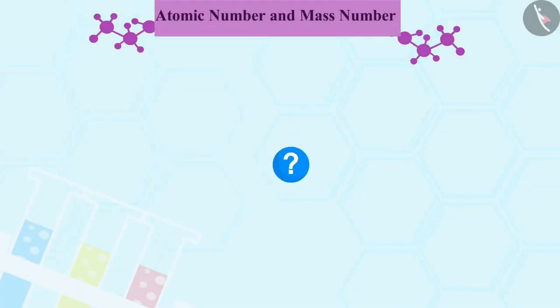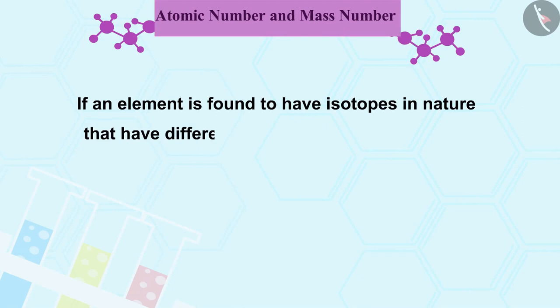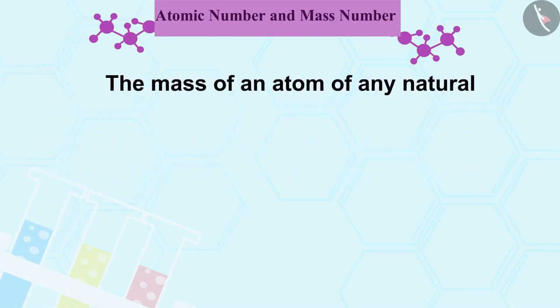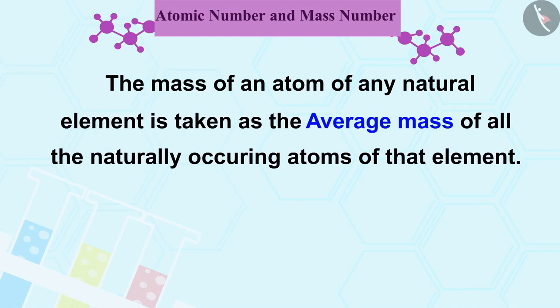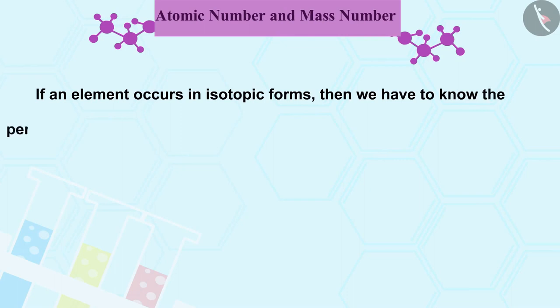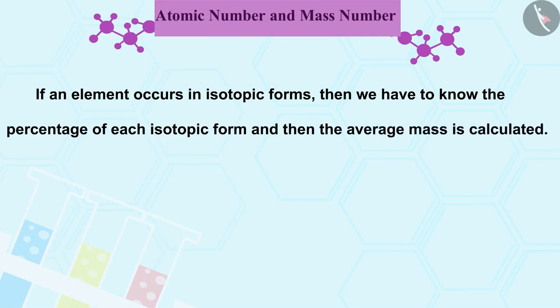But now you might be thinking that if an element is found to have isotopes in nature that have different mass numbers, what would we consider the mass of the atom of that element? Let's find it out. The mass of an atom of any natural element is taken as the average mass of all the naturally occurring atoms of that element. If an element occurs in isotope forms, then we have to know the percentage of each isotope form and then the average mass is calculated.